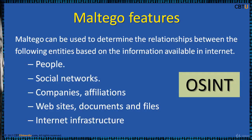Maltego can be used to determine the relationships between the following entities: people names, email addresses, aliases, groups of people, social networks, network of networks, companies, affiliations, websites, documents and files, internet infrastructure such as domains, DNS names, and IP addresses.